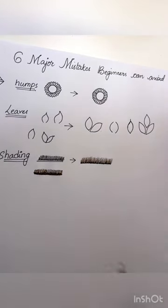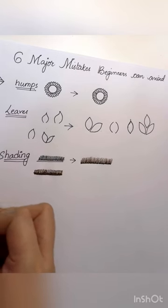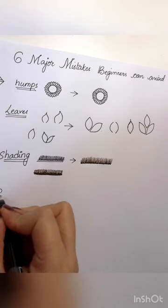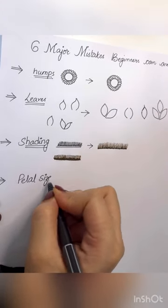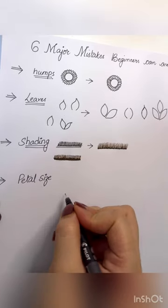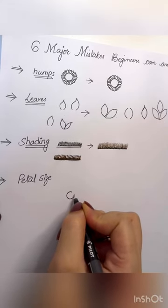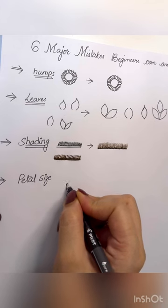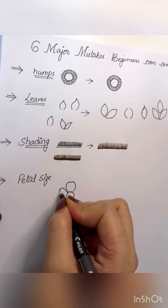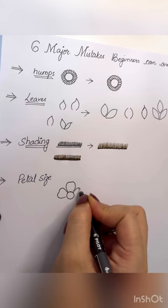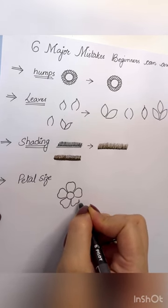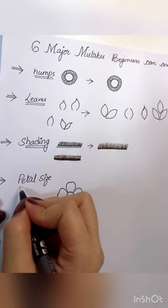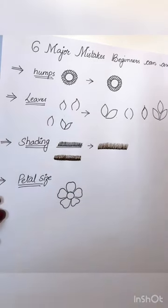The fourth mistake that beginners can avoid is with the petal size. Whenever you construct any flower, most of the time one of the petal goes smaller in size. So how do you fix it?